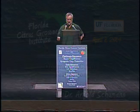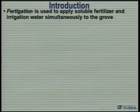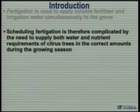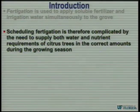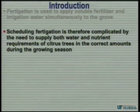Good morning. I'm addressing the topic of fertigation for citrus specifically. Fertigation is simply defined as the ability to apply soluble fertilizer and irrigation simultaneously to the grove through the existing irrigation equipment. Scheduling with fertigation is therefore somewhat complicated by the need to supply both water and nutrient requirements of the trees in correct amounts during the entire growing season.